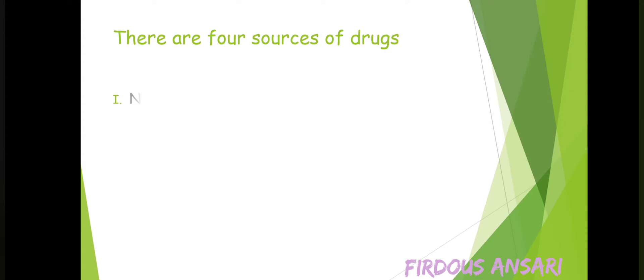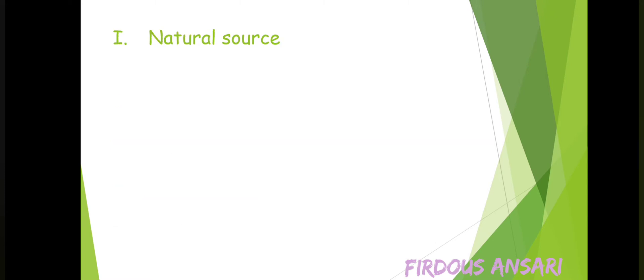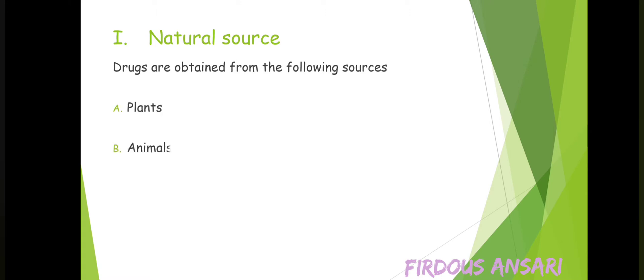There are 4 sources of drugs. These are natural source, semi-synthetic source, synthetic source, and biosynthetic source, also known as genetically engineered. The first is the natural source, which is the most primitive and abundant one. Drugs are obtained from the following sources: plants, animals, minerals, and microorganisms.